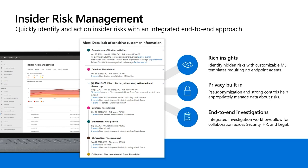We use risky sequences of activities like exfiltrating data through email or copying it to an external USB. We also use contextual elements like HR resignation dates and risky performance reviews — elements that may ultimately lead an insider to be considered risky. It's used by companies worldwide to identify insider risks and take action through our collaborative workflow.